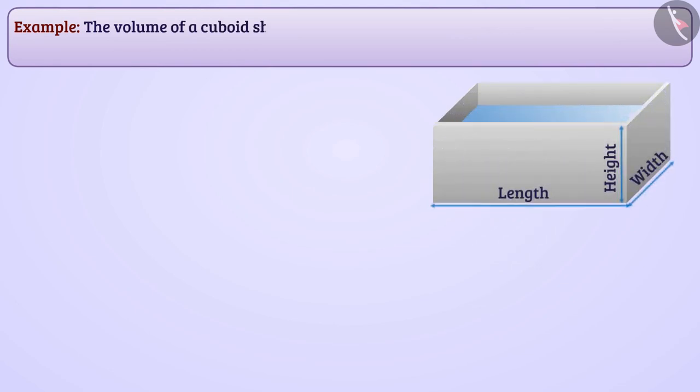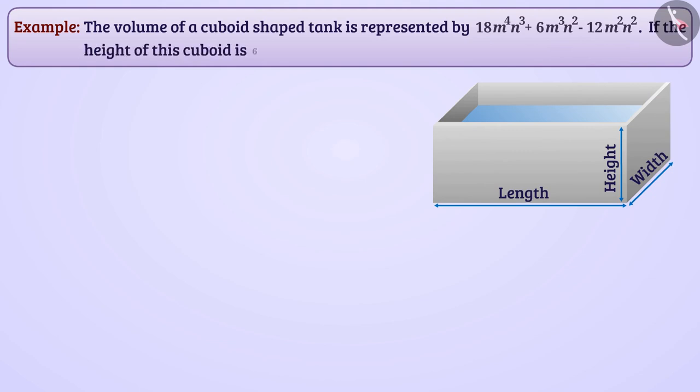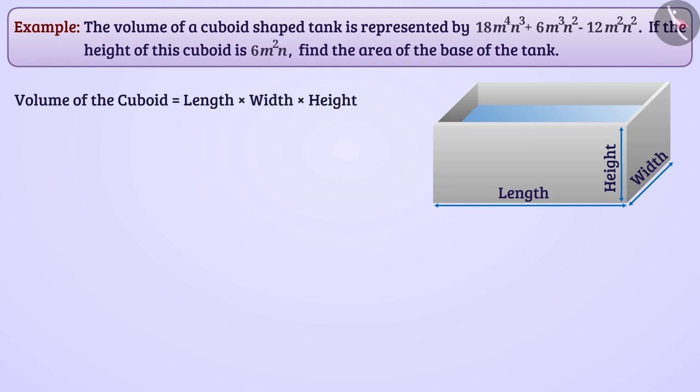The volume of a cuboid shaped tank is represented by this algebraic expression. If the height of this cuboid is 6m squared n, find the area of the base of the tank. We know that volume of cuboid equals length multiplied by width multiplied by height. Here by product of length and width, we will find the area of base of the cuboid.